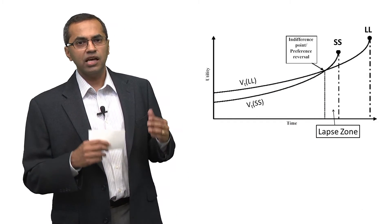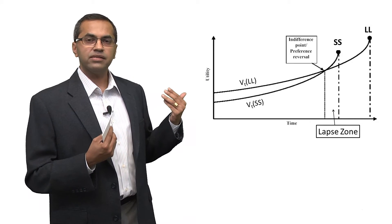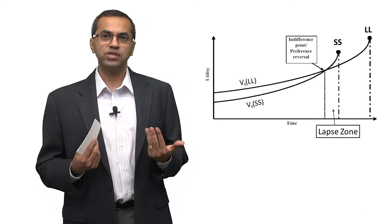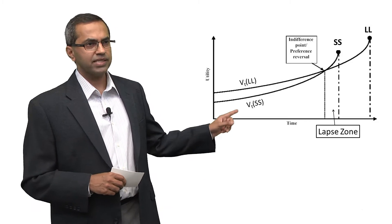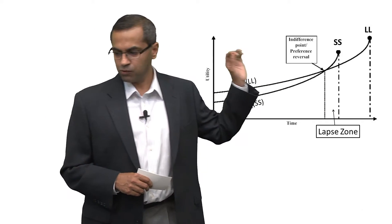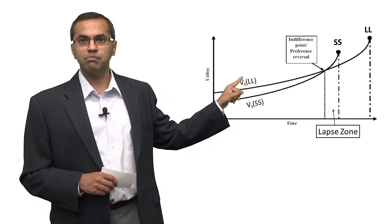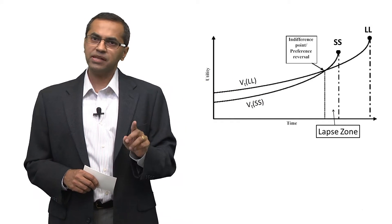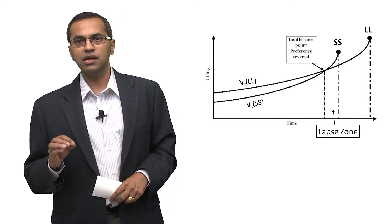What you'll see is if I'm looking at the future today, I can see that SS is shorter than LL. I'm going to choose LL. I'm going to be patient. I'm going to wait for the larger, later reward. But as I keep getting closer and closer, I get to a point that's called the indifference point. And an area of time that's marked on that plot as the lapse zone. And what happens in the lapse zone is suddenly SS starts looking larger than LL.